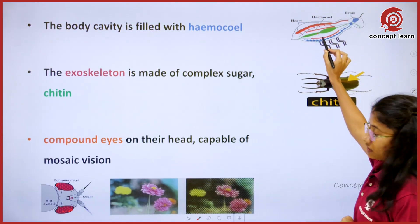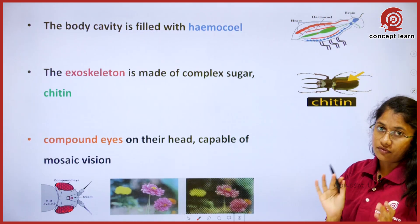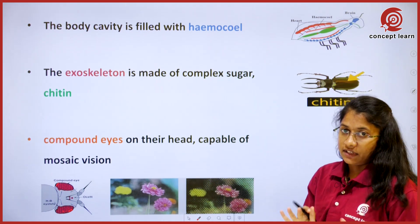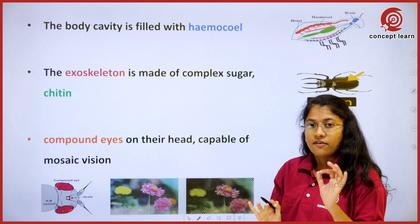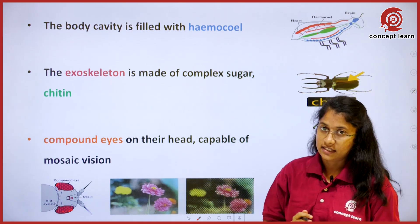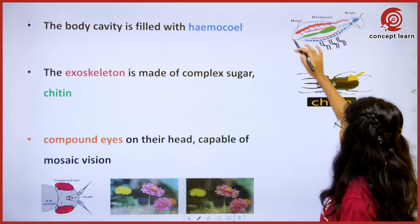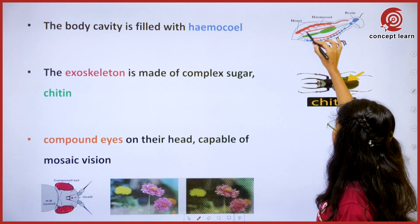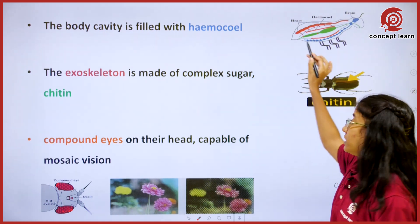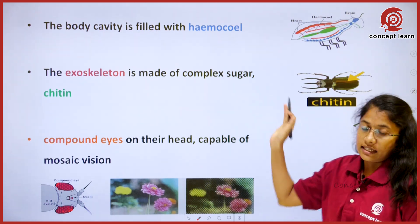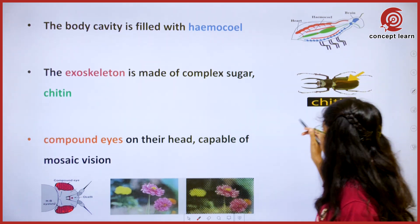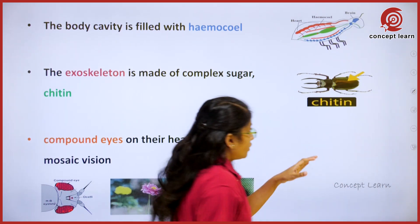There is an empty body cavity — an empty space between the organs of the insect. This empty body cavity is filled with a colorless fluid that flows between the organs, and this is known as the haemocoel.